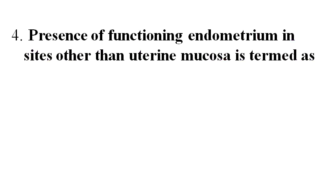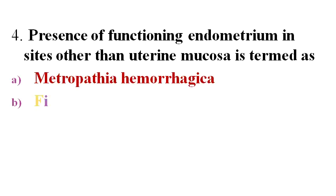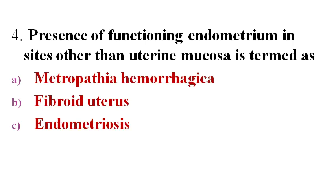Next question: Presence of functioning endometrium in sites other than uterine mucosa is termed as? Options A. Metropathia hemorrhagica, B. Fibroid uterus, C. Endometriosis, D. Dermoid cyst.